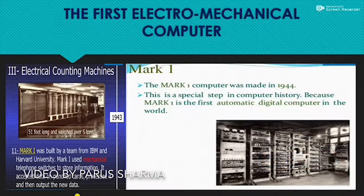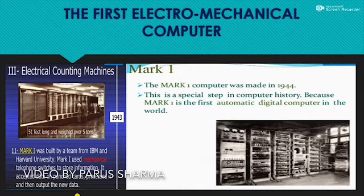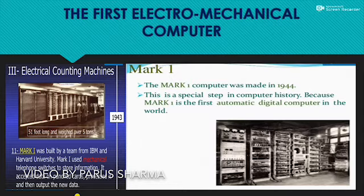After these mechanical machines, we have the first electromechanical computer — Mark One. It was made in 1944 by Professor Howard Aiken. It was 55 feet long and weighed five tons. It used a typewriter for input and punch cards for output. This device was the first computer in the real sense because it could do heavy calculations.